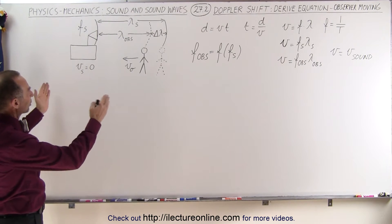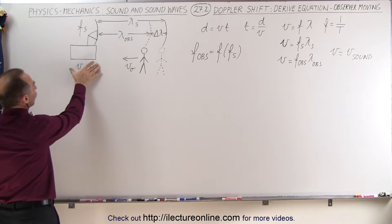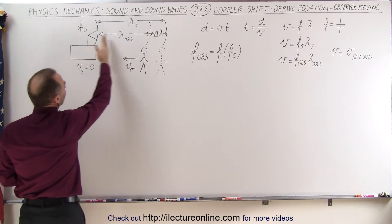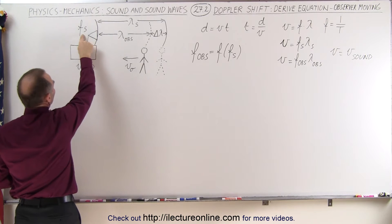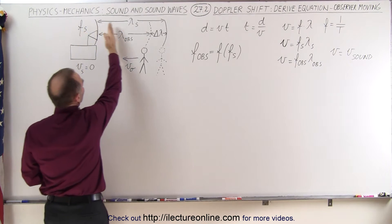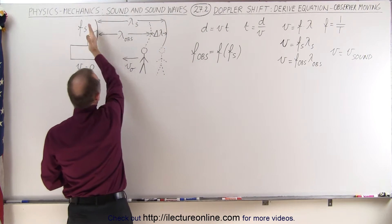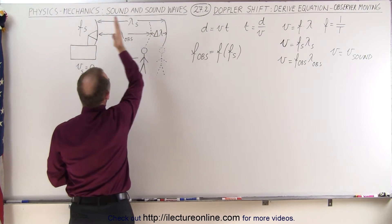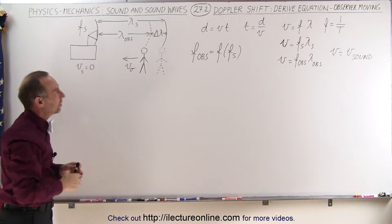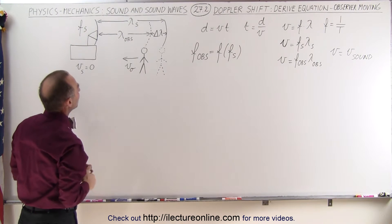Let's first take a look at the picture and see what's happening. In this case, we have the source that's stationary — not moving — putting out a sound that has a particular frequency, the source frequency, and a particular wavelength. So you can see that waves go out at a particular frequency, and therefore we have a period — a certain amount of time between the waves.